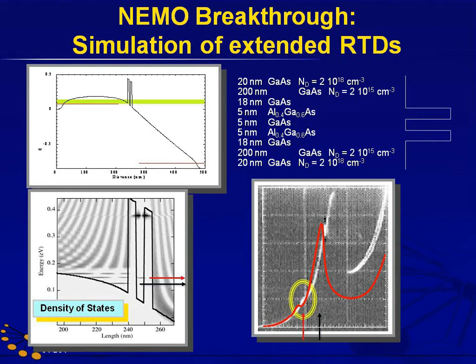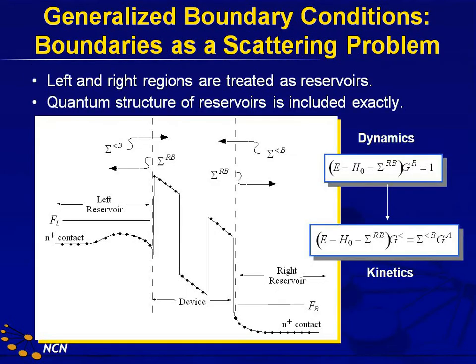You can associate the main peak of the IV with tunneling from the ground state in the emitter to the ground state in the resonant tunneling diode. The key message in quantum transport is that not only do you have to know where the states are, but how they are filled. So you have a dynamics equation that tells you where the states are, and a kinetics equation that tells you how they are filled.